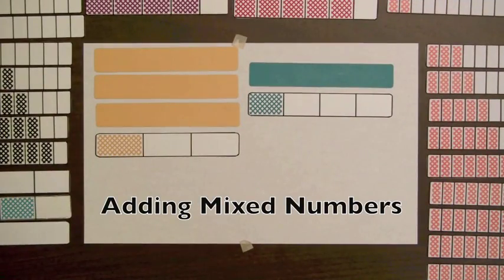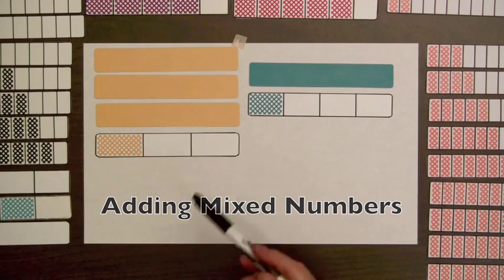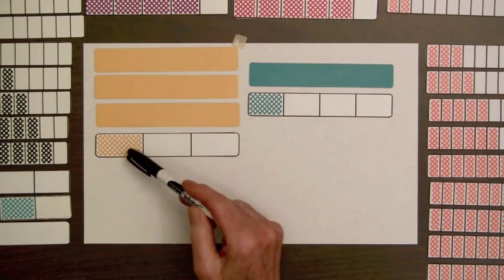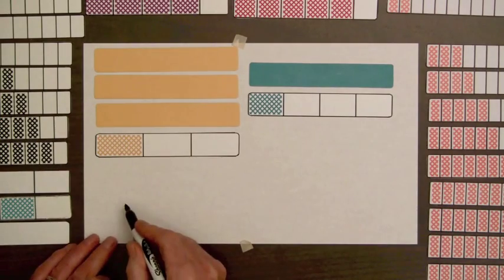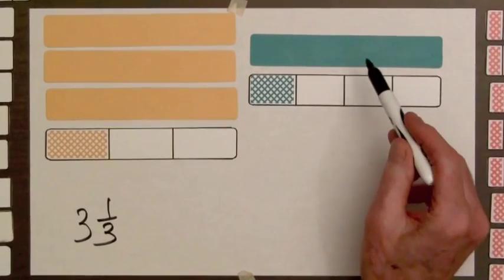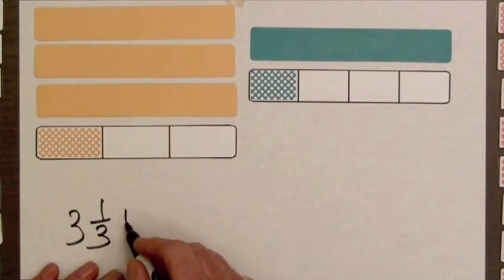Let's model the sum of two mixed numbers. Here we've turned the yellow bars upside down. Each one of these represents one. We've got three and a third, so I've got three and one-third. Here we've turned the blue bar upside down. This represents one. We have one and one-fourth.